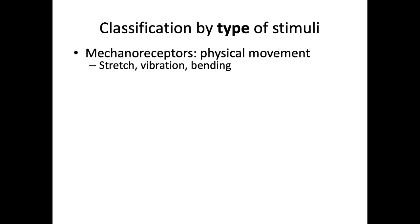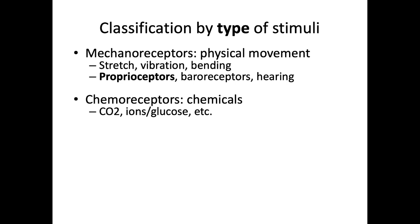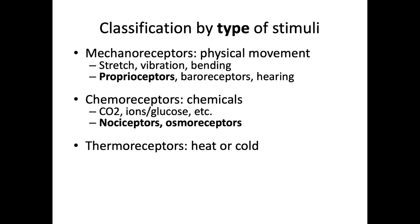Our third way of classifying receptors is by the type of stimuli that activates it. Mechanoreceptors are activated by physical movement — things like stretch, vibration, or bending of the receptor. Examples include proprioceptors, baroreceptors, and hearing receptors. Chemoreceptors are activated by binding to chemicals such as carbon dioxide, various ions like calcium or sodium, and glucose. Examples include pain receptors called nociceptors and osmoreceptors that measure water and salt balance. Thermoreceptors respond to heat or cold, and photoreceptors respond to light energy.